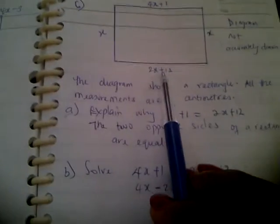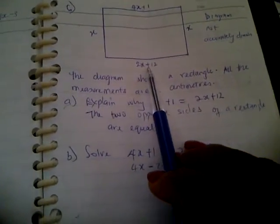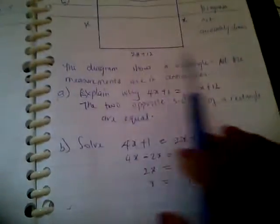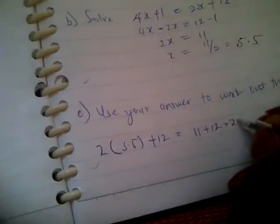Perimeter is just going around it. And here, if you're substituting 5.5 in this other equation to get the value of this length, you have 2 into 5.5 plus 12. 2 times this is 11, so 11 plus 12 is 23.